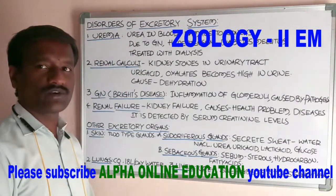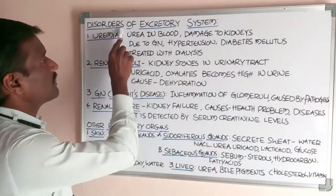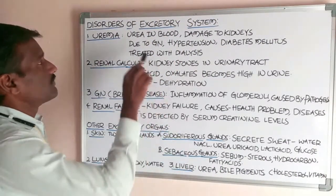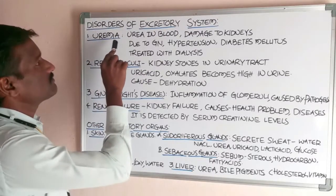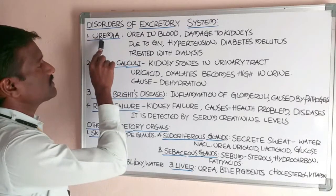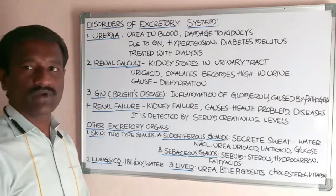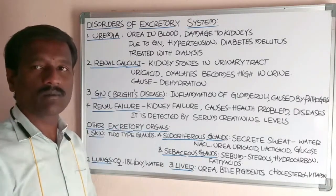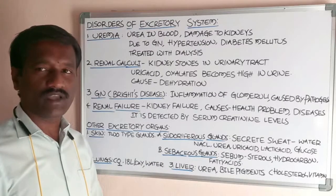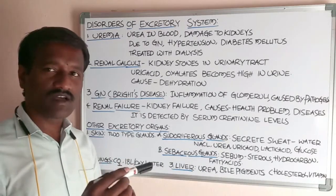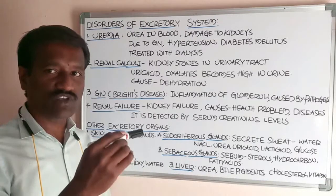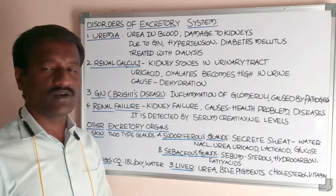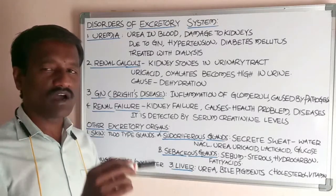Students, we are going to discuss about the disorders of the excretory system. The first disorder is uremia. Uremia means the presence of urea in the blood. Urea is the main nitrogenous waste substance which is eliminated to the outside through the kidneys.